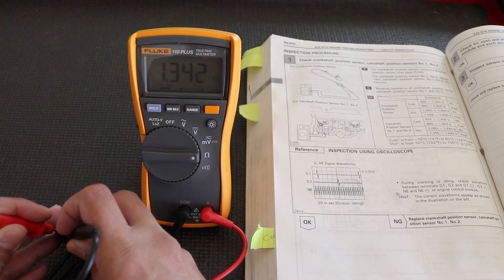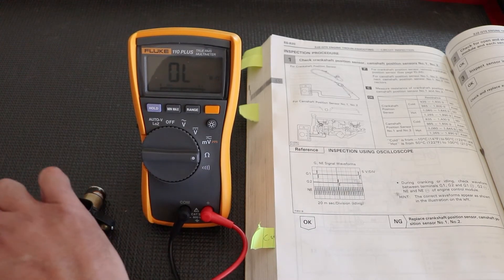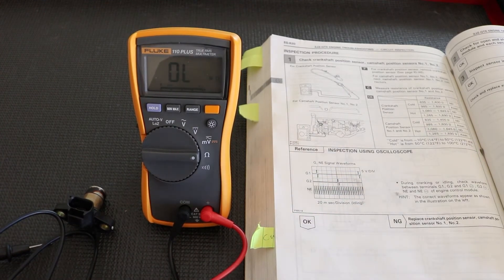And our cold reading gives us 1.342 kilo ohms, which when we convert that, that's going to be 1342 ohms, which is in the specification of our chart.